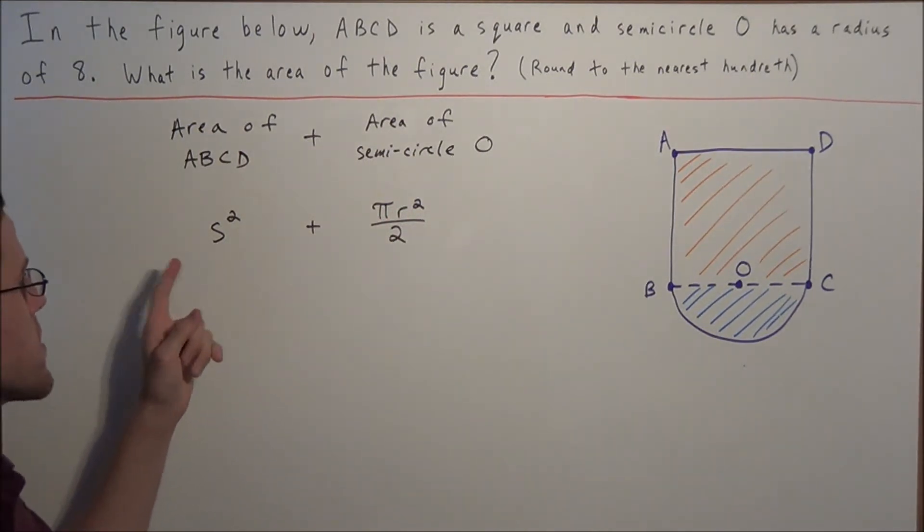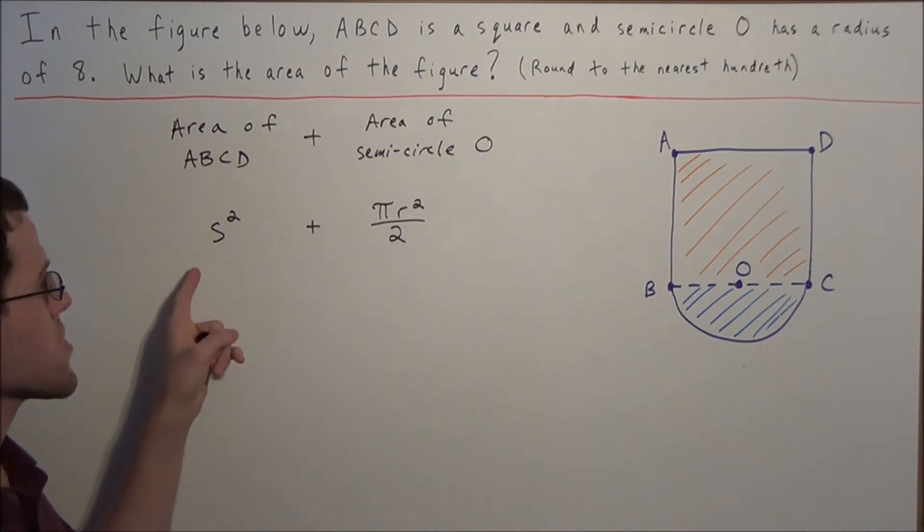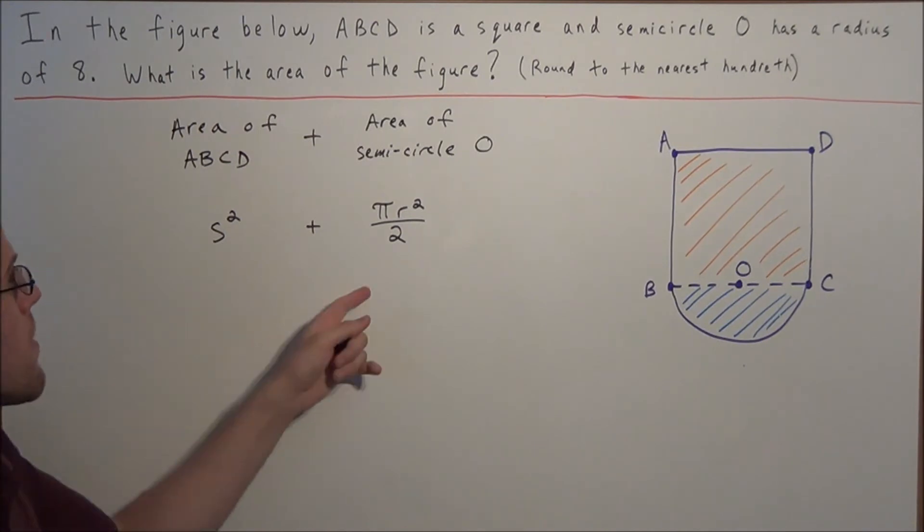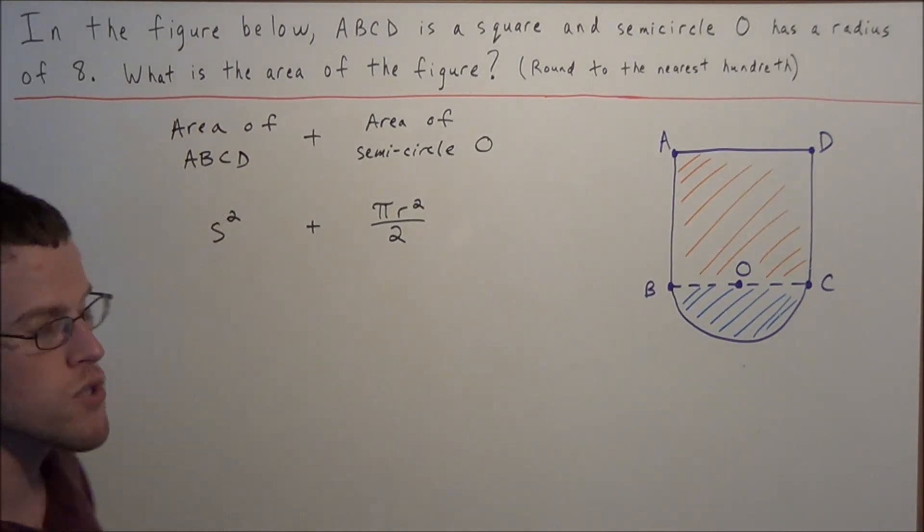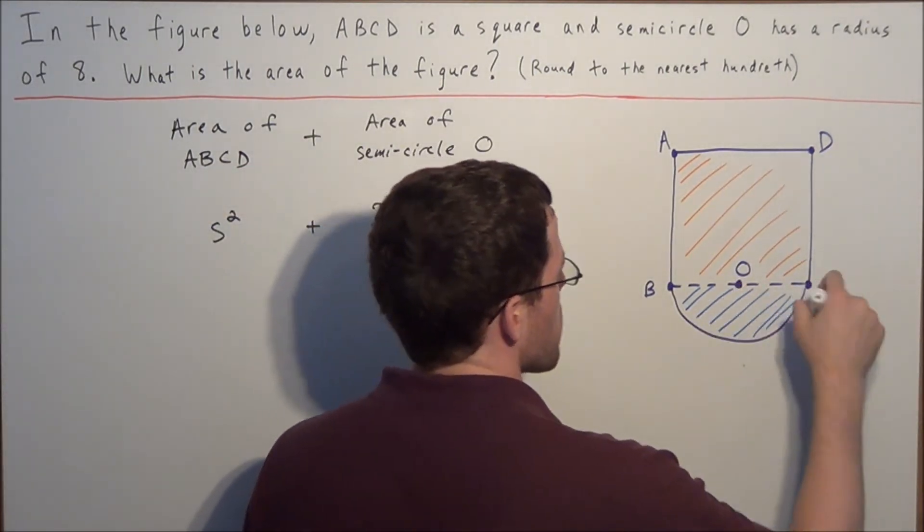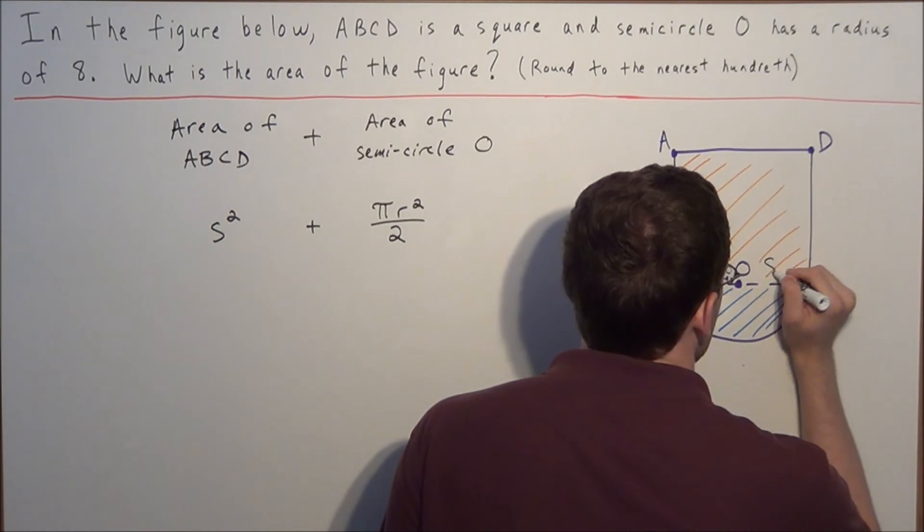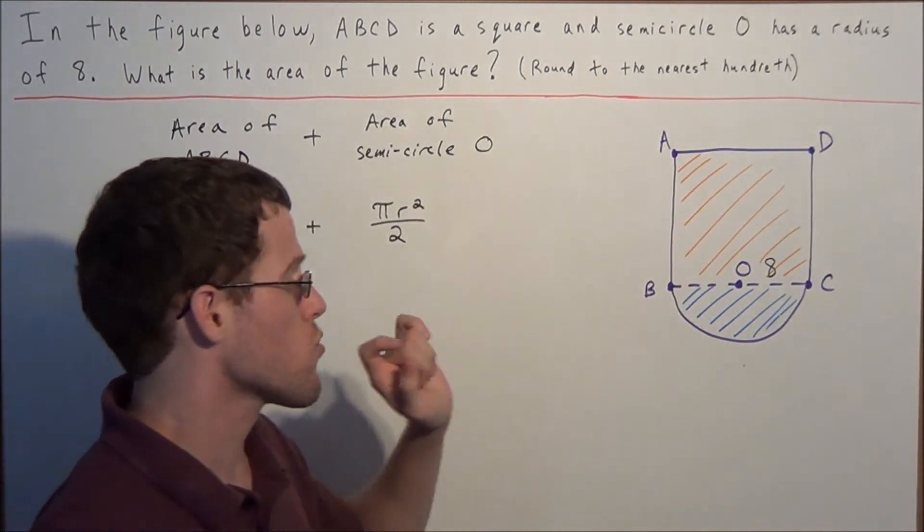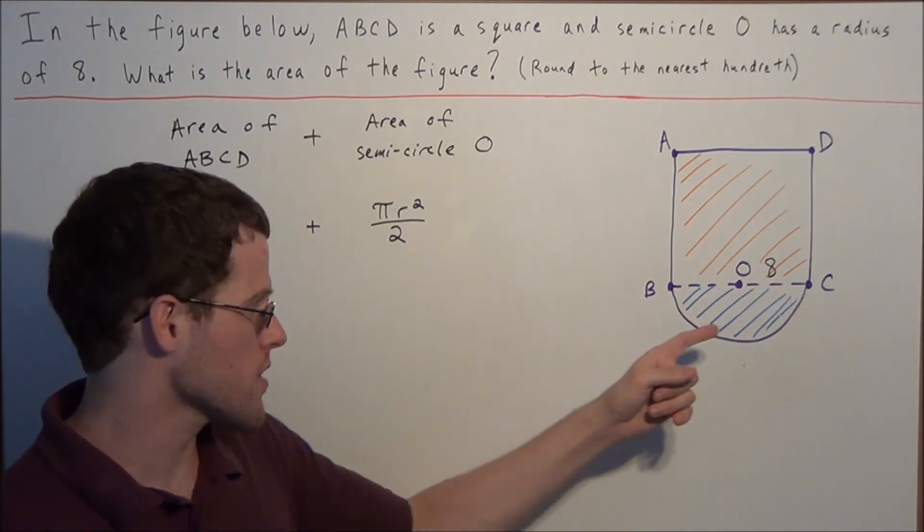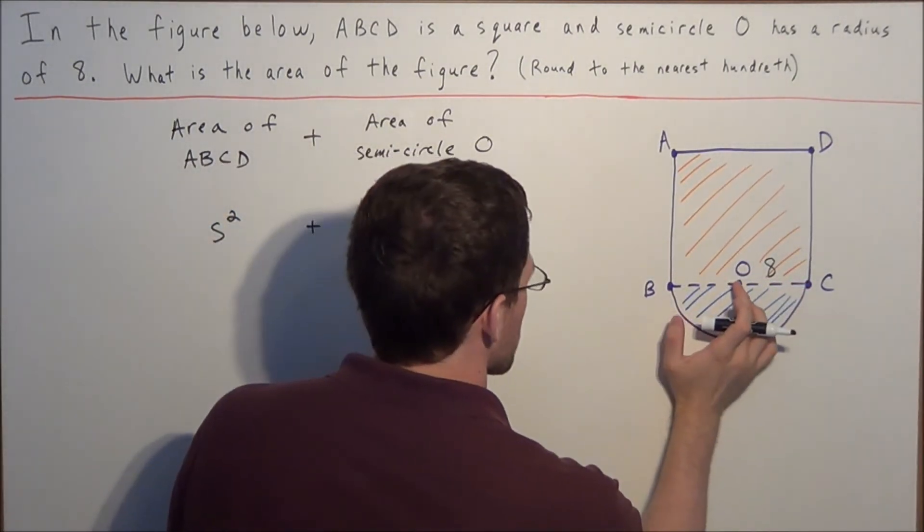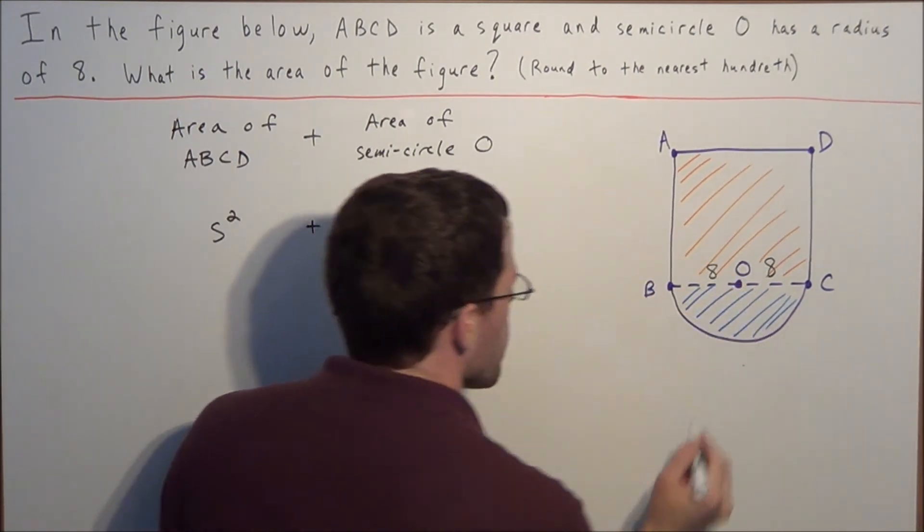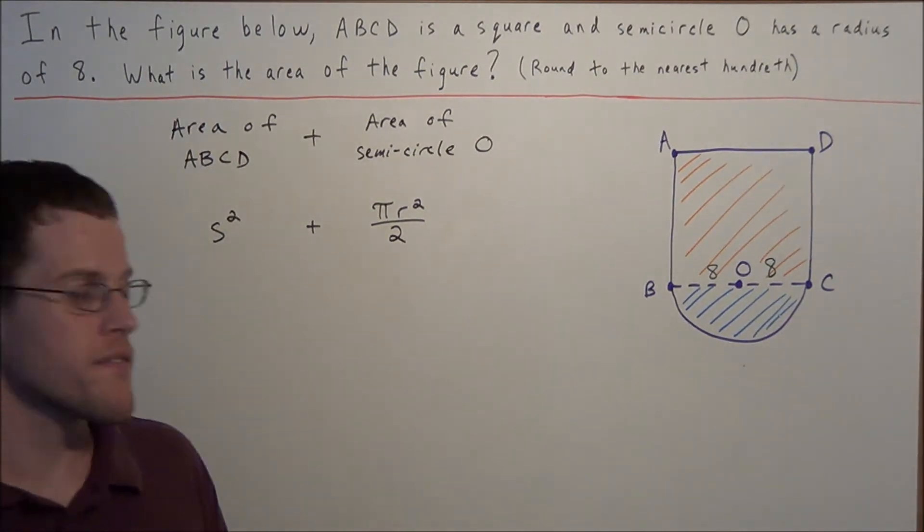So now we need to find the dimensions. We need to find the length of the side of the square and we need to find the radius of semicircle O. But let's keep in mind the radius of the semicircle was given to us. They said that the radius of the semicircle is 8. So we could label segment OC, we could label this segment 8. Because a radius by definition goes from the center of the circle to a point on the outside of the circle. So this means that we could also label the radius OB, we could set that equal to 8 as well. Because by definition all of the radii in a circle are of the same length.